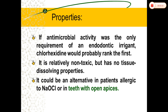The combination of hypochlorite and chlorhexidine is preferred to enhance antimicrobial properties, but the presence of hypochlorite in the canal during irrigation with chlorhexidine produces an orange-brown precipitate known as para-chloro-aniline, or PCA. This precipitate occludes the dentinal tubules and may compromise the seal of the obturated root canal.